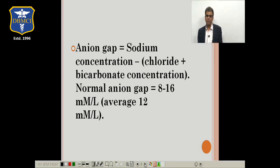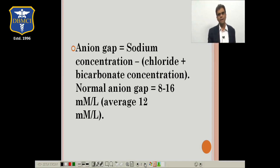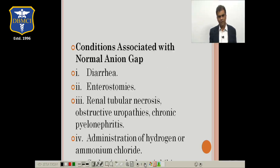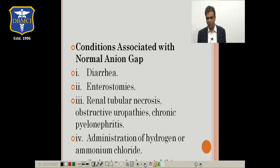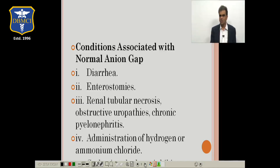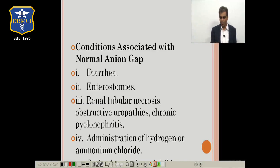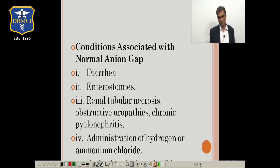Conditions where bicarbonate decreases but chloride increases maintaining normal anion gap include diarrhea — bicarbonate loss from the gut compensated by increased chloride — as well as other gut-related conditions like enterostomies, ileostomies, colostomies, renal tubular necrosis, obstructive uropathy, chronic pyelonephritis, and administration of hydrogen or ammonium chloride.